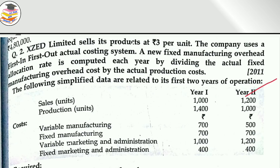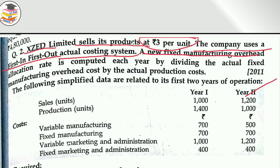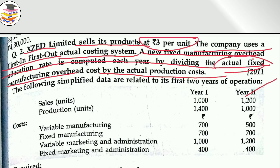Let's see what the question is. The question says that XYZ Limited sells its product at Rs. 3 per unit. The company uses a first-in-first-out actual costing method. FIFO means that whatever item comes in first, it will go out first. A new fixed manufacturing overhead allocation rate is computed each year by dividing the actual fixed manufacturing cost by the actual production cost.